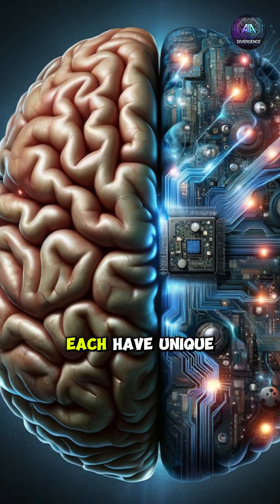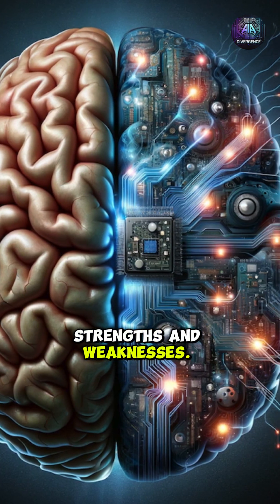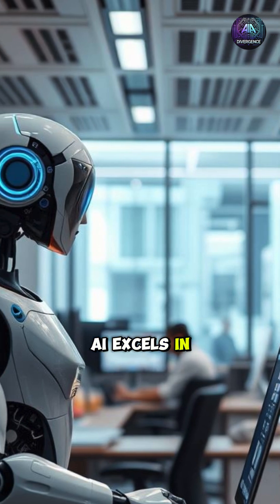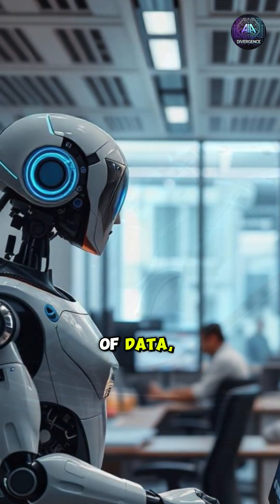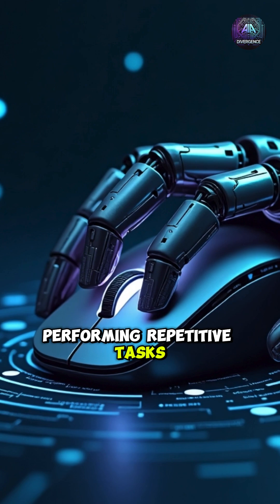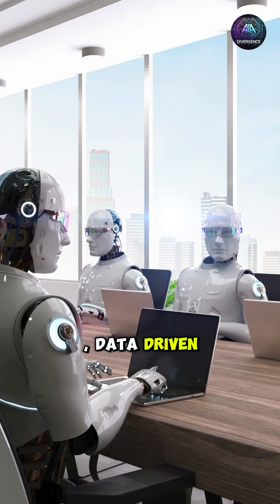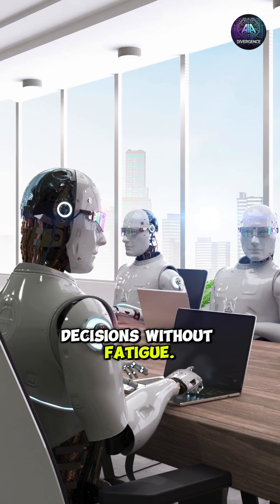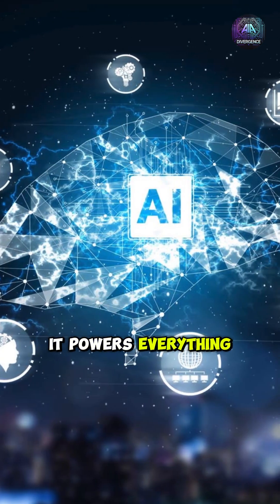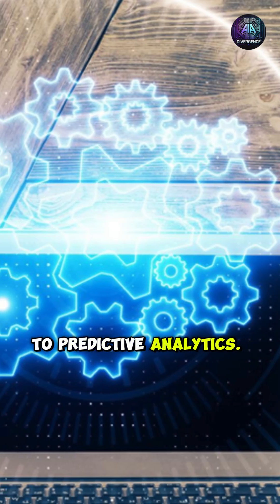AI and human intelligence each have unique strengths and weaknesses. AI excels in processing vast amounts of data, performing repetitive tasks, and making fast, data-driven decisions without fatigue. It powers everything from automation to predictive analytics.